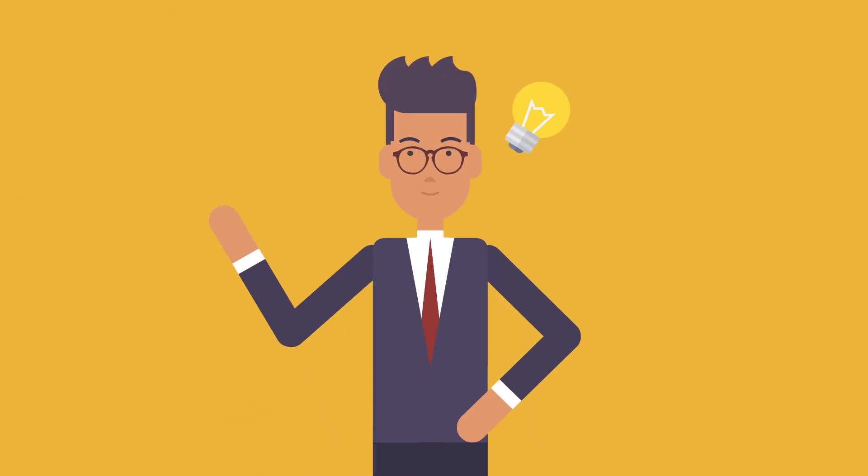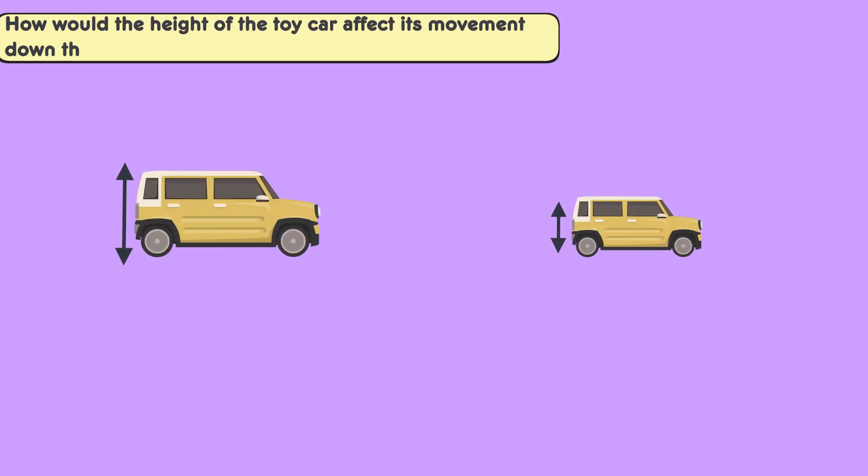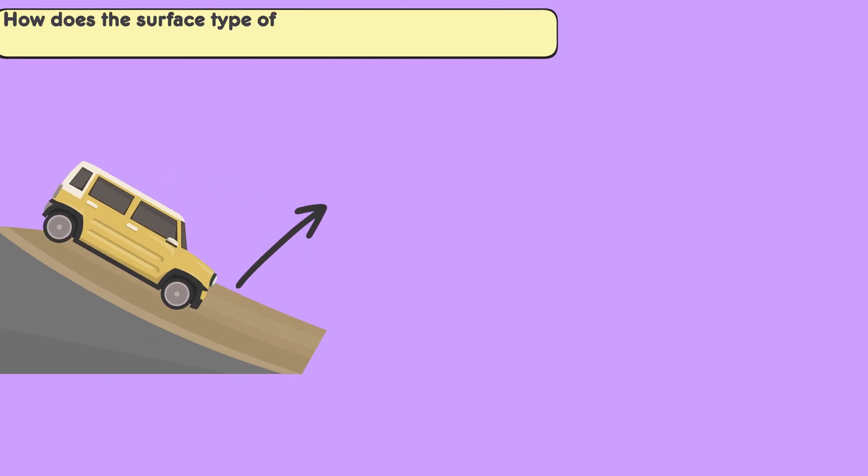Here are some guiding questions for answer choices. How would the height of the toy car affect its movement down the ramp? What does this tell us about its center of gravity? How does the surface type of the ramp affect the distance the toy car travels? What role does friction play?